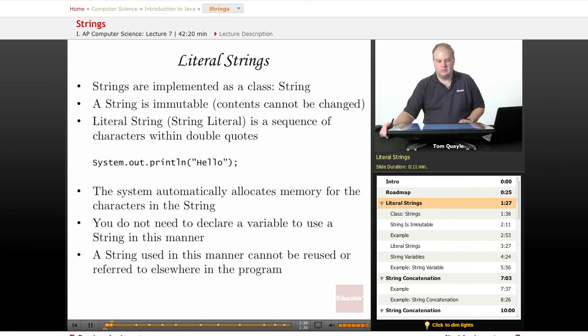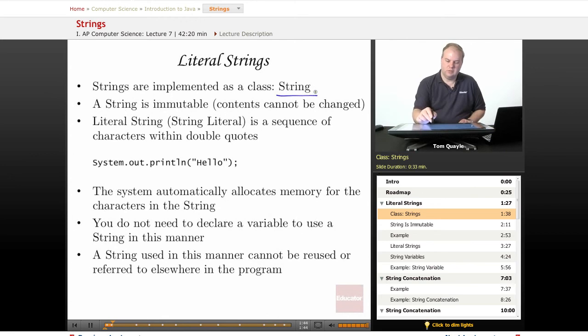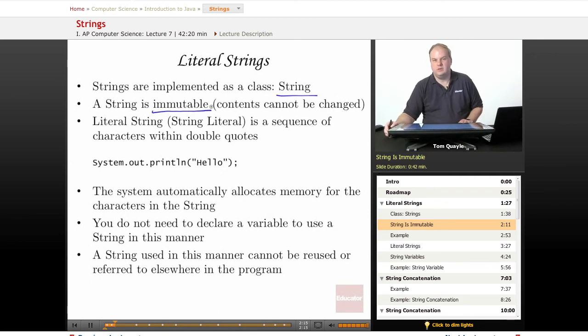First, we'll talk about literal strings. Strings in Java are implemented as a class called String. Strings are not one of the primitive types in Java, such as int, double, or boolean. Because they are implemented as a class, they have certain capabilities that primitive types don't have, but you do have to work with them a little bit differently. In Java, by convention, a class name typically begins with a capital letter. So when you're going to use an object of type String in your program, you need to be sure to capitalize the S. A string is immutable, and that's a big word that means that the contents of a string cannot be changed once they have been assigned. We'll talk more about that later in today's lesson.